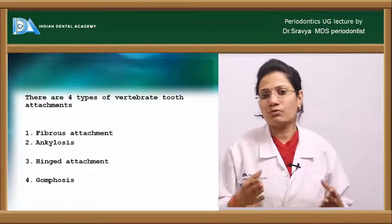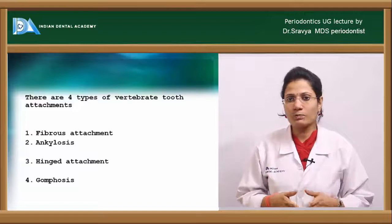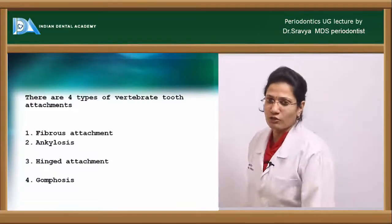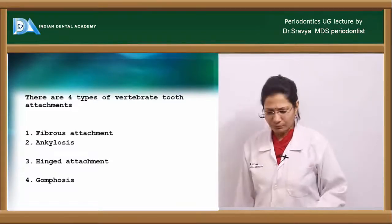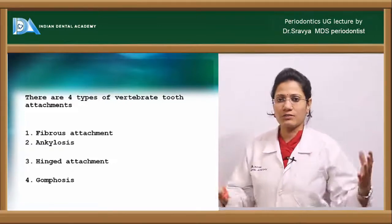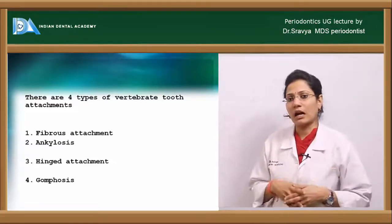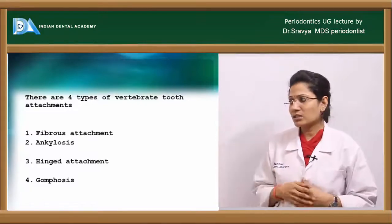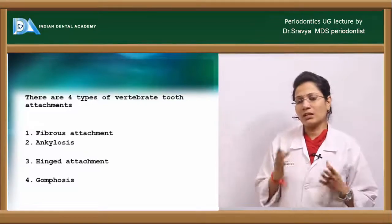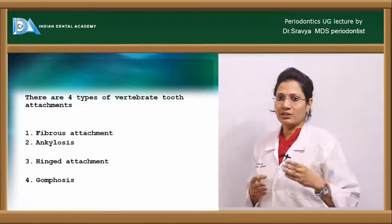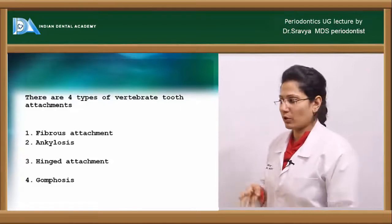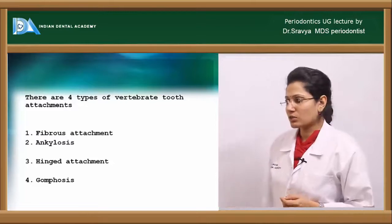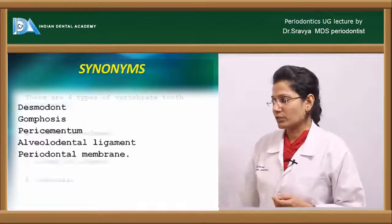Your cementum and alveolar bone form the hard tissue components of your periodontium whereas your periodontal ligament and the gingiva form the soft tissue components. In vertebrates, four different types of attachment were detected: fibrous attachment, ankylosis, hinged attachment and gomphosis.